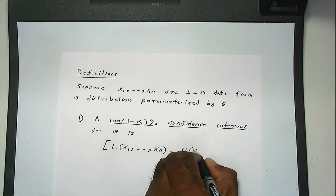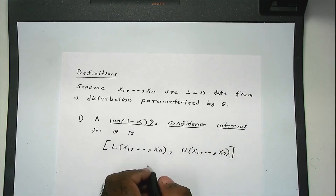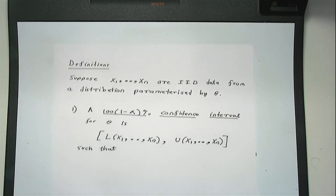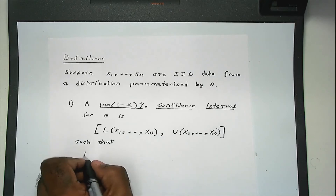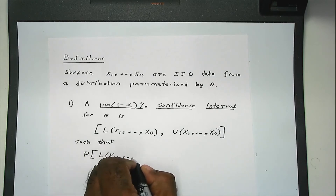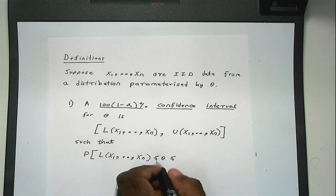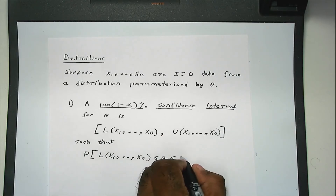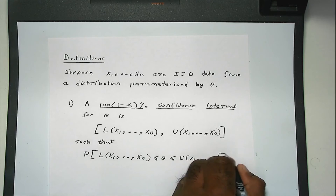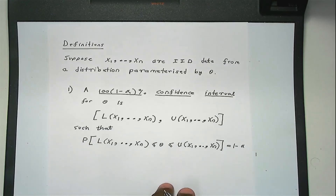So q is the upper limit, also a function of the data, such that this is the confidence interval — it must satisfy the following condition: the probability that θ lies between these two limits. In other words, the probability that the lower limit is less than or equal to θ, less than or equal to the upper limit, is equal to 1 minus alpha. So this is the definition of a confidence interval.